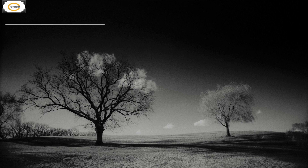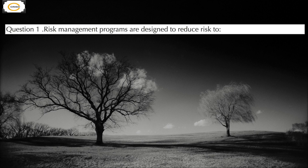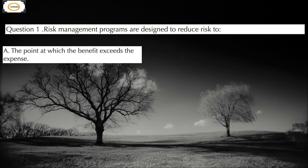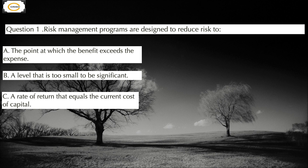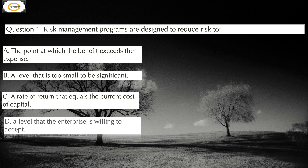Question number 1 states: risk management programs are designed to reduce risk to — Option A: the point at which the benefit exceeds the expense; Option B: a level that is too small to be significant; Option C: a rate of return that equals the current cost of capital; Option D: the level that the enterprise is willing to accept.